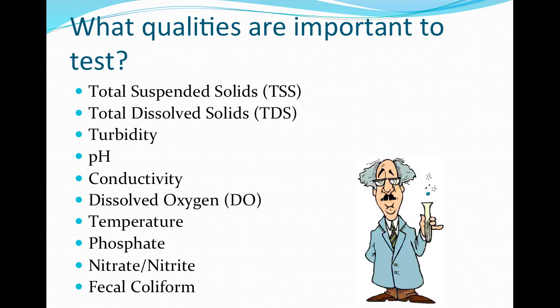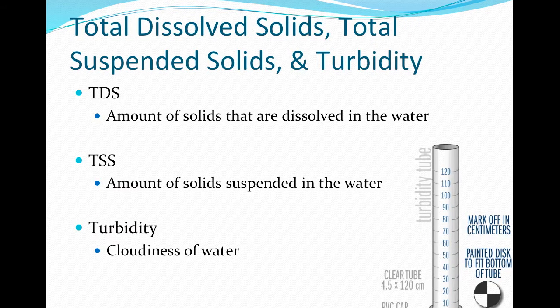The most commonly tested water quality parameters are total suspended solids, total dissolved solids, turbidity or water clarity, pH, conductivity, dissolved oxygen, temperature, phosphorus and nitrogen, and fecal coliform. Total suspended solids are a measure of how much sediment, algae, or other fine particulates are suspended within the water sample. It is very similar to turbidity but measured as milligrams per liter instead of centimeters or meters. This can give an indication of problem areas of erosion.